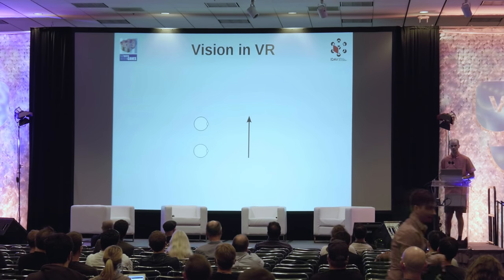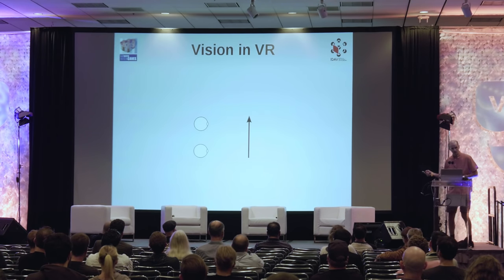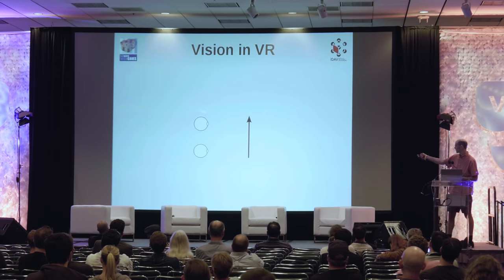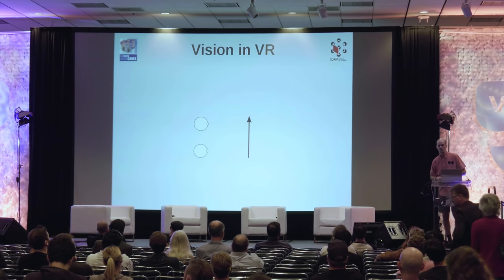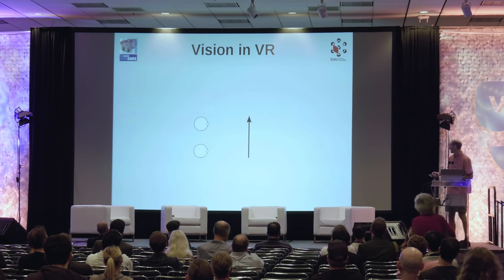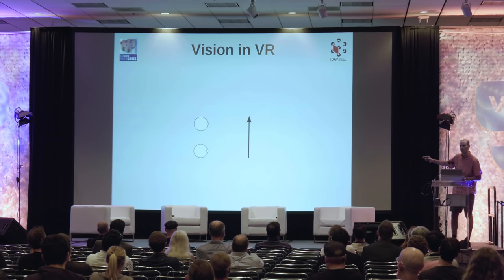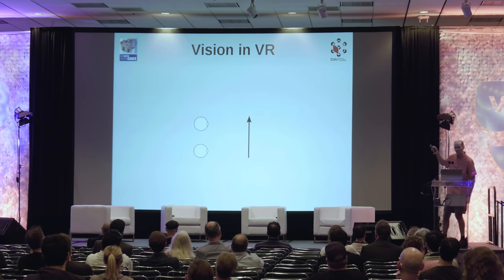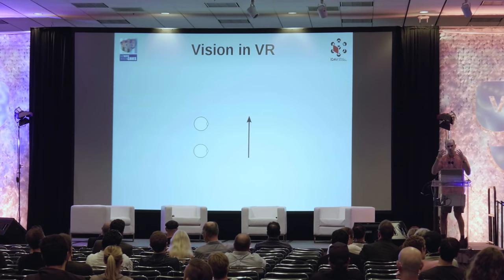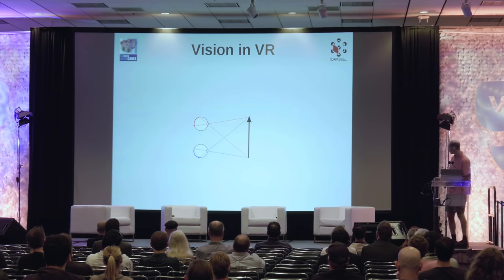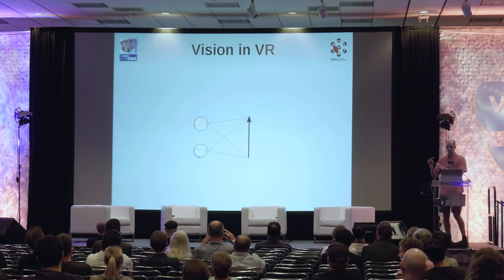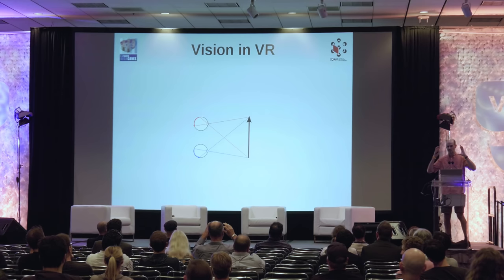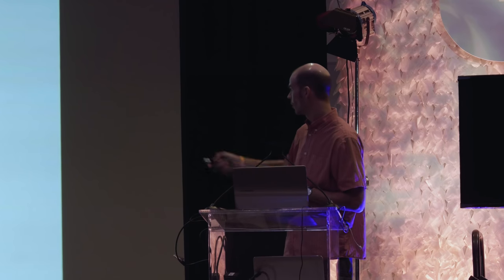How does perception work? How do humans perceive the three-dimensional world around them? We have a scenario with our VR user, Alice, seen from the top, reduced to her most important assets: two eyeballs. There's also an object — an arrow in this case. Light from the object goes toward the eye, enters through the pupil and lens, hits the retina, and gets detected by photosensitive cells — rods and cones — which send a signal to the brain.